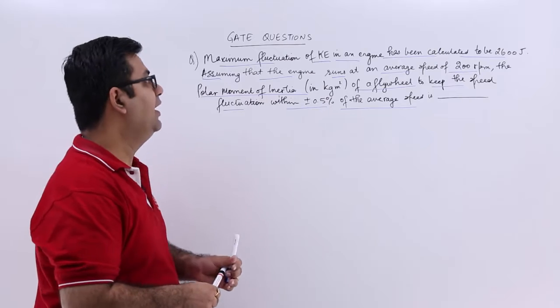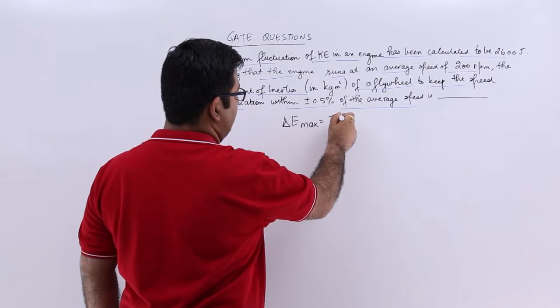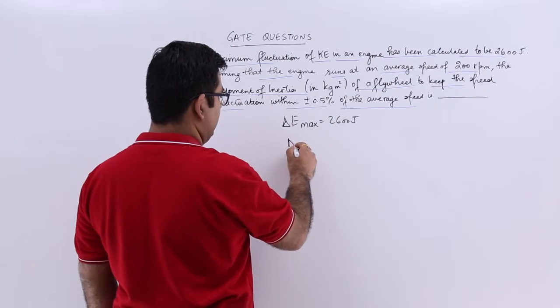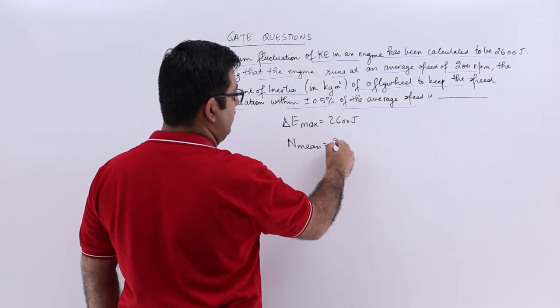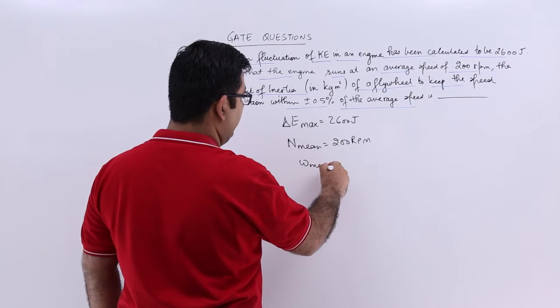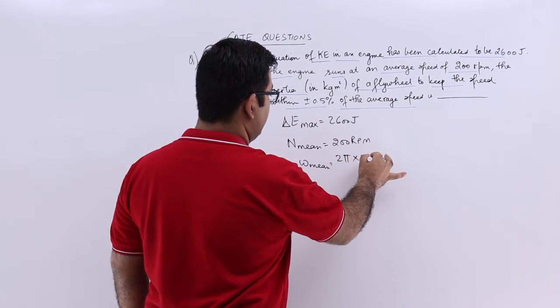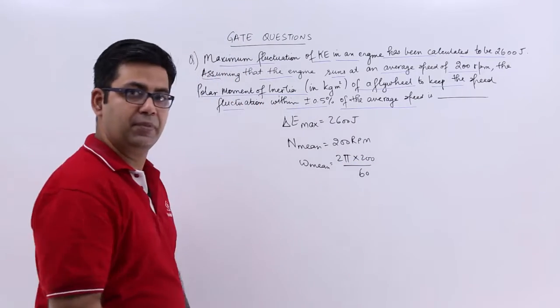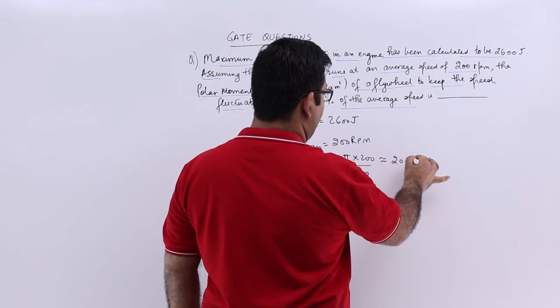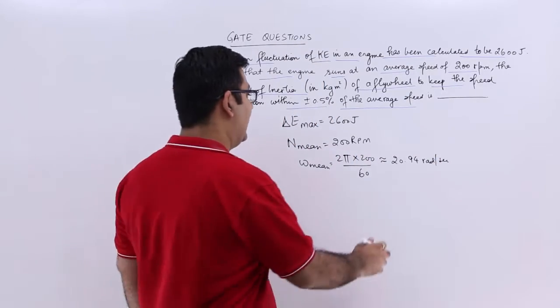The given data is that the maximum fluctuation, delta E max, is 2600 joules. The mean speed in rpm is 200. This means I can find out the mean angular velocity. So that would be 2π × 200 / 60, which gives you 20.94 radians per second. That's omega mean.